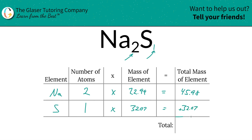And then to find the total mass of the entire compound, we simply just need to add this column up. See how nice and easy that is? So that's going to be 78.05.